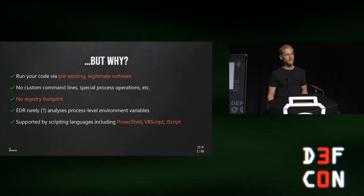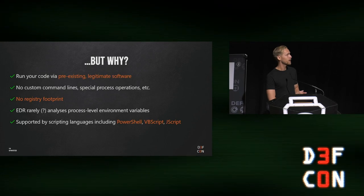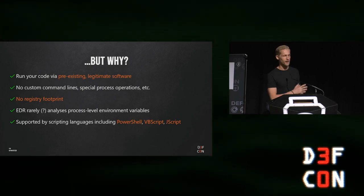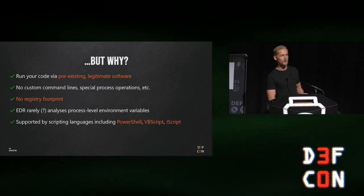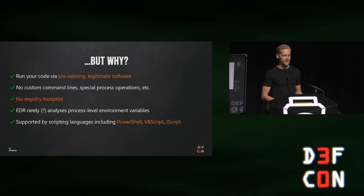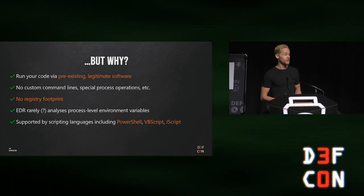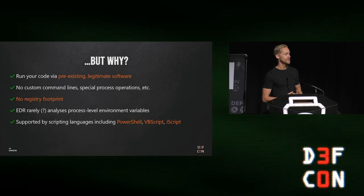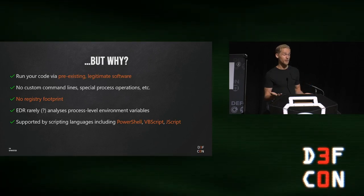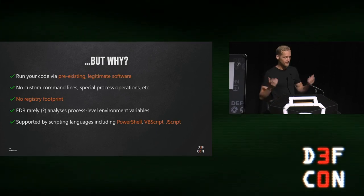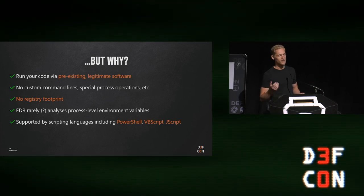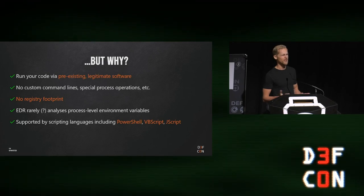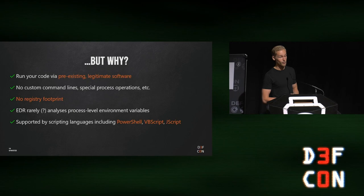From an AV and EDR perspective, they can see environment variables at the process level, but very rarely do they actually hunt for them or write rules for them. That means you might get away with it because the really obvious artifacts — command line and registry — are not there. This was an example with PowerShell, but you can also do it with VBScript or JScript. You could write a macro that does this in a very stealthy way. Because you use legitimate processes — run from System32 — you might get away with it. You could also write C code to launch a process with a different environment variable, but having scripting language support makes this really powerful.